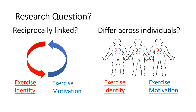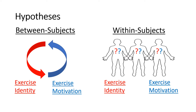The research questions are: number one, what is the reciprocal link between exercise motivation and identity? If exercise motivation increases, does exercise identity also increase? Or if exercise identity decreases, does exercise motivation also decrease? Their other question is how do these things differ across individuals — for example, if someone finds motivation later, will their exercise identity increase? These hypotheses are structured as between-subject hypotheses looking at the reciprocal link, and within-subject hypotheses looking at how individuals vary over time.